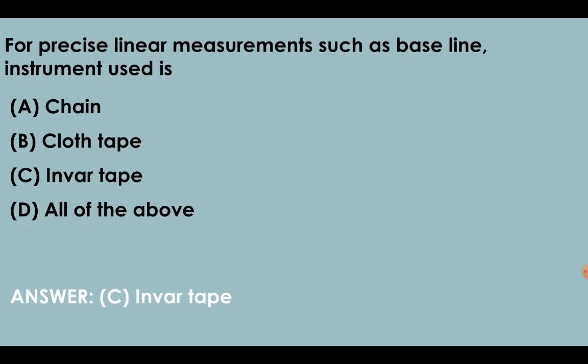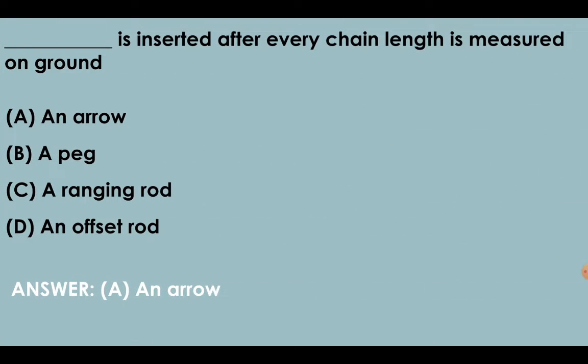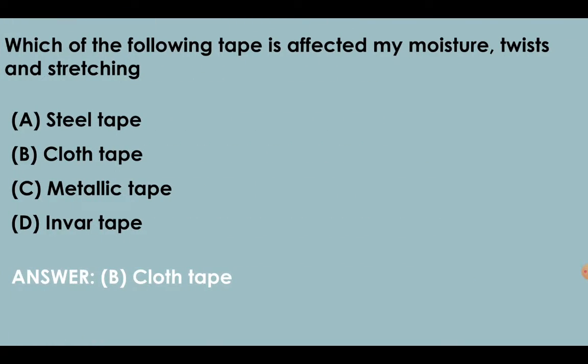For precise linear measurements such as baseline, instrument that should be used is the most accurate and precise one, which is Invar tape among the given options. Invar tape has least coefficient of thermal expansion. An arrow is inserted after every chain length is measured on ground.